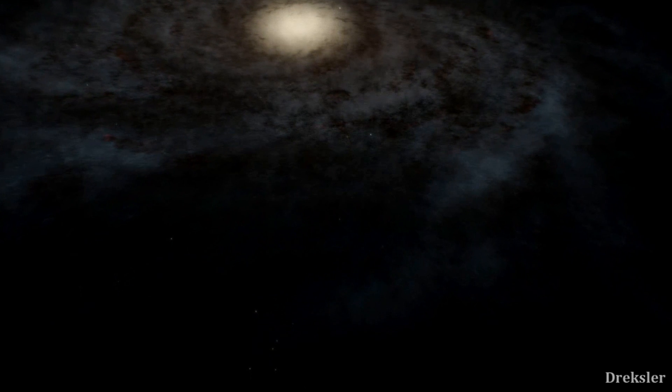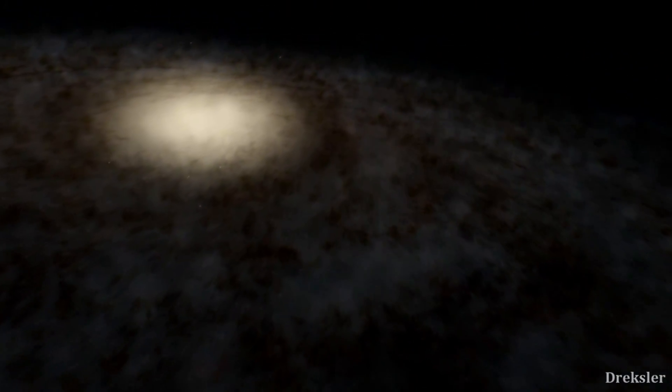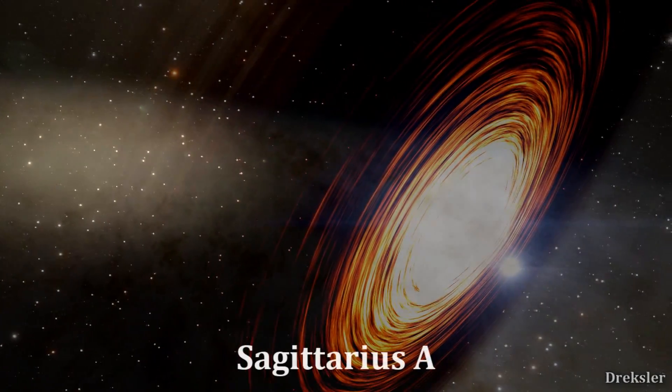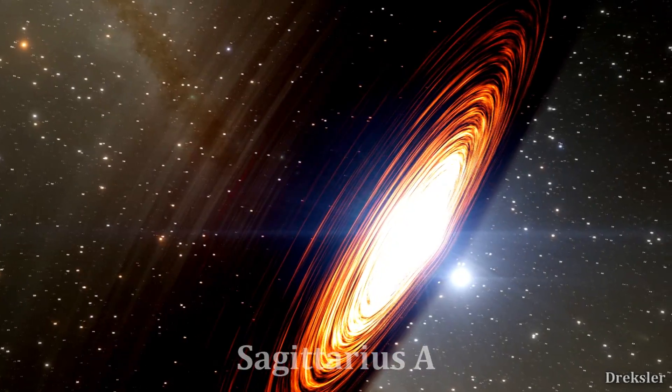Our Sun orbits a central black hole in the Milky Way same as every other star in the Milky Way. So really we are traveling around our galaxy. Now our central black hole is Sagittarius A but it is not the closest one there is to us.